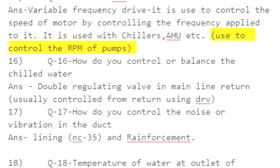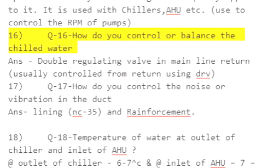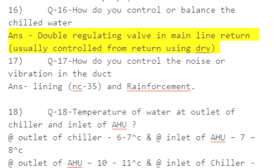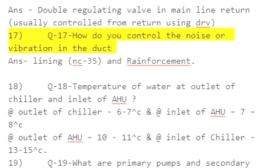Q16: How do you control and balance the chilled water? Answer: Use a double regulating valve in the mainline return — usually controlled from the return using a drive.